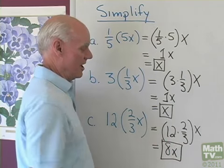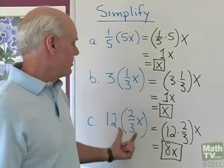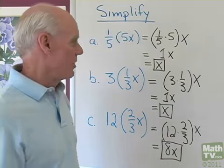So the answer to that is just 8x. So you're going to see a lot of problems like this as you progress through the book using the associative property.